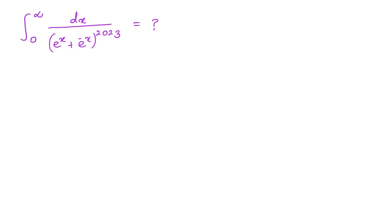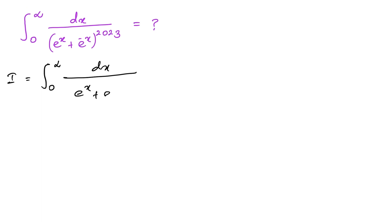Hello everyone, welcome to the Mathematics Image channel. In this video we are going to solve this interesting integral: the integral from 0 to infinity of dx over (eˣ + e⁻ˣ)^2023. Let us take I equal to the integral from 0 to infinity of dx over (eˣ + e⁻ˣ)^n, where instead of 2023 we use n. Then at the end we can plug in n = 2023.